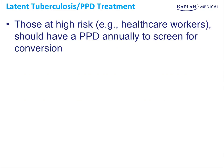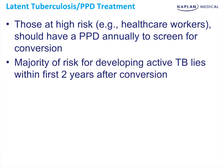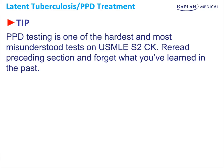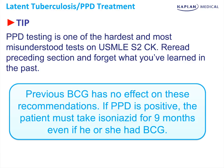Those at really high risk, such as healthcare workers, should have a PPD annually to screen for conversion to a positive PPD and therefore for TB exposure. The majority of risk for developing active TB lies within the first two years after conversion. Once the PPD is positive, it will always be positive in the future. One particularly important tip is that the PPD test is one of the hardest and most misunderstood tests on this exam — what is given in this lecture is the way to approach PPD questions on Step 2. Finally, the previous BCG vaccination has no effect on these recommendations. If the PPD is positive, the patient must take isoniazid for nine months regardless of whether they've had a BCG vaccination.